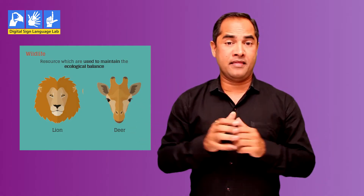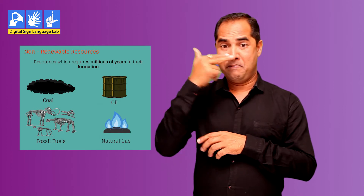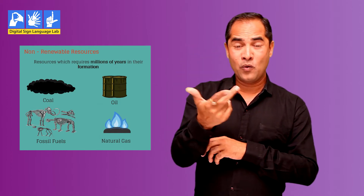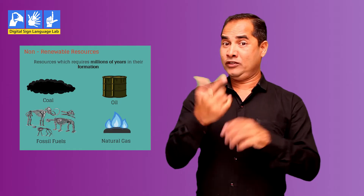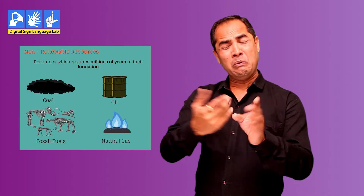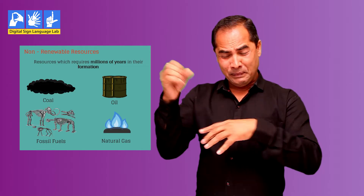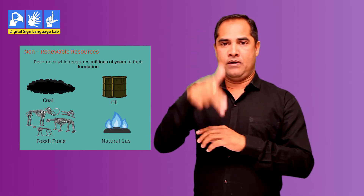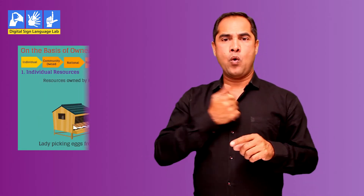Wildlife can also be replenished. On the other hand, we have non-renewable resources. These resources, once consumed, cannot be replaced. For example, oil and coal cannot be renewed after they have been used. Resources like oil and coal take millions of years in their formation. It takes a long time to create such resources, but they get exhausted very quickly.